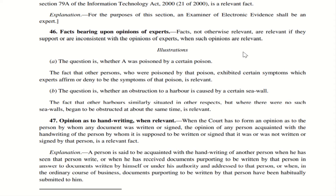Illustration A: the question is whether A was poisoned by a certain poison — let's call it Poison X. The fact that other persons who were poisoned by Poison X exhibited certain symptoms, which experts affirm are the symptoms of that poison, or experts say those persons don't have the symptoms of that particular poison — that is relevant. So Poison X having or not having particular symptoms, as affirmed by an expert, becomes a relevant fact.